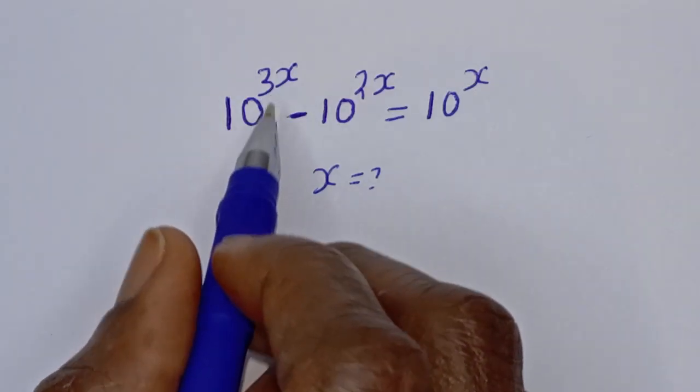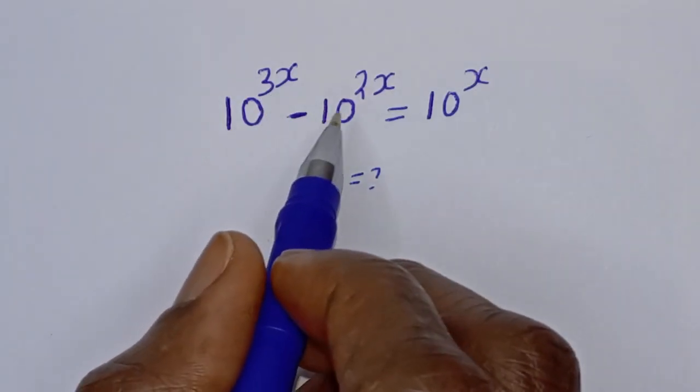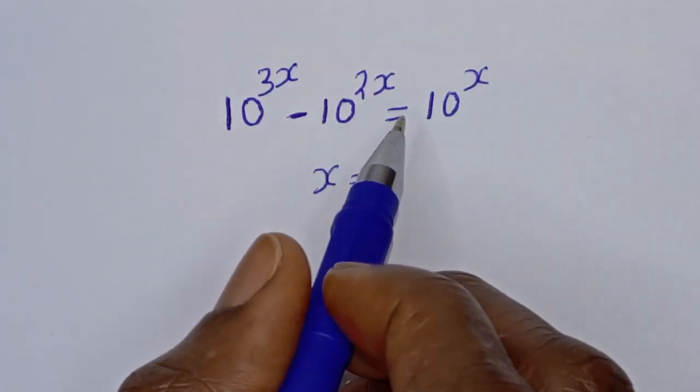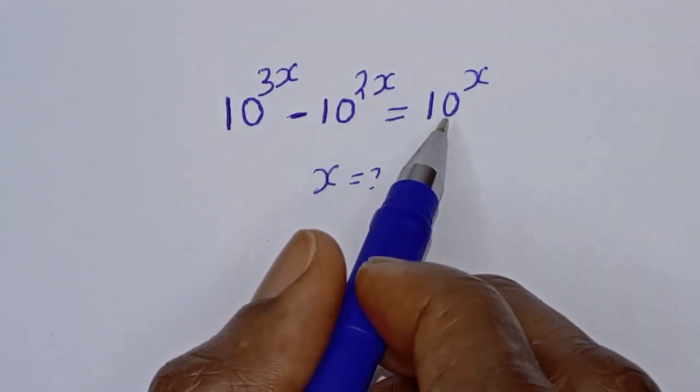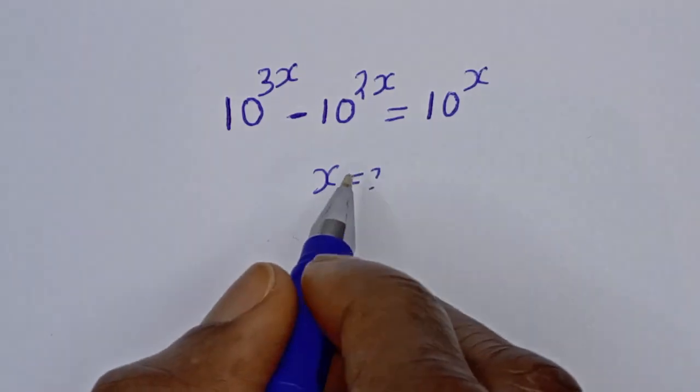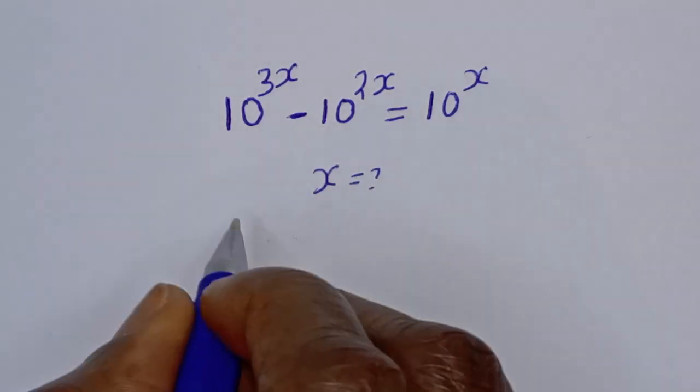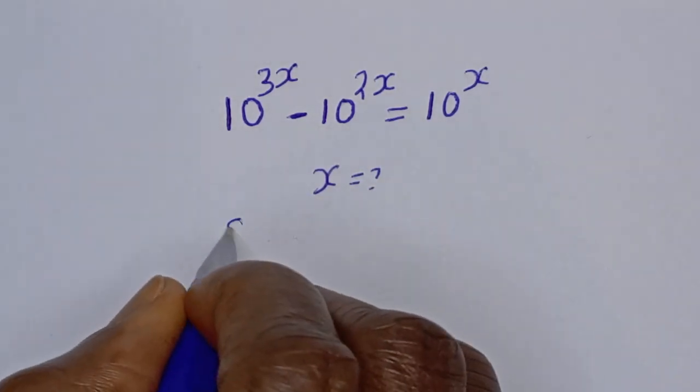10 raised to power 3s minus 10 raised to power 2s is equal to 10 raised to power s. What is the value of s?